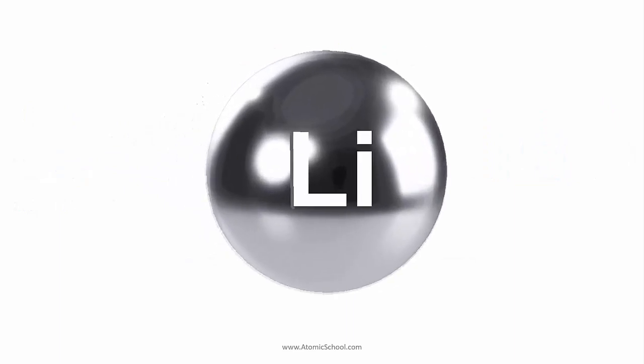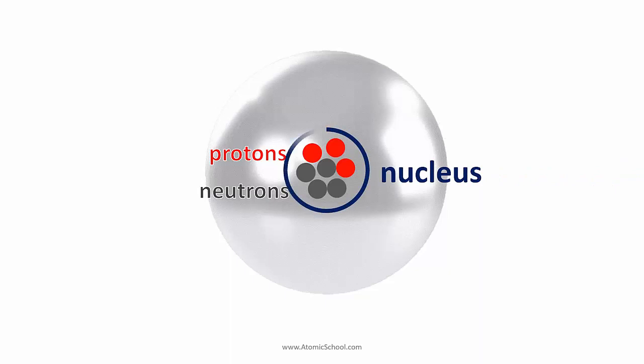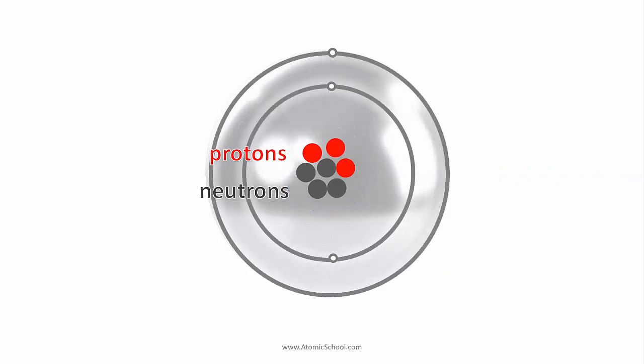About a hundred years ago, scientists found a way to look inside atoms and found they were made of three kinds of smaller particles. Protons and neutrons in their centre, called the nucleus, and electrons orbiting in shells outside.